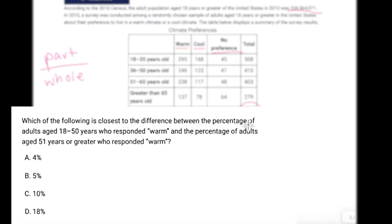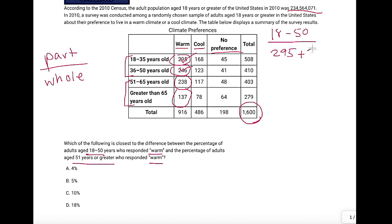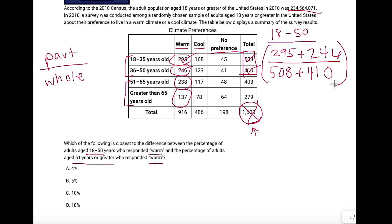The question asks: which is closest to the difference between the percent of adults aged 18 to 50 years who responded warm and the percentage of adults aged 51 years or greater who responded warm? So 18 to 50 is this age bracket and 51 or greater is those rows. They're being tricky because they're asking us to add up more than just one row. So part over whole: our part of the 18 to 50 group is 295 plus 246, and our whole is the total people interviewed from that bracket — 508 plus 410. Don't add these up yet; throw the whole thing into Desmos to get a fraction.